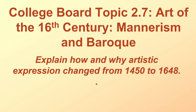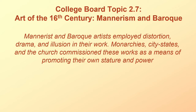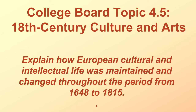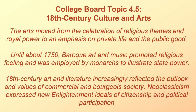The College Board asks us to explain how and why artistic expression changed from 1450 to 1648 — and we're going to go a little bit later than that as well. Topic 2.7 makes this point: mannerist and Baroque artists employed distortion, drama, and illusion in their work. Monarchies, city-states, and the church commissioned these works as a means of promoting their own stature and power. And then in topic 4.5, it says the arts moved from the celebration of religious themes and royal power to an emphasis on private life and the public good.